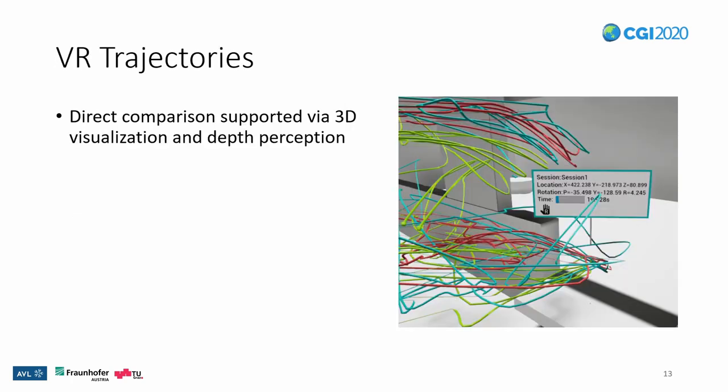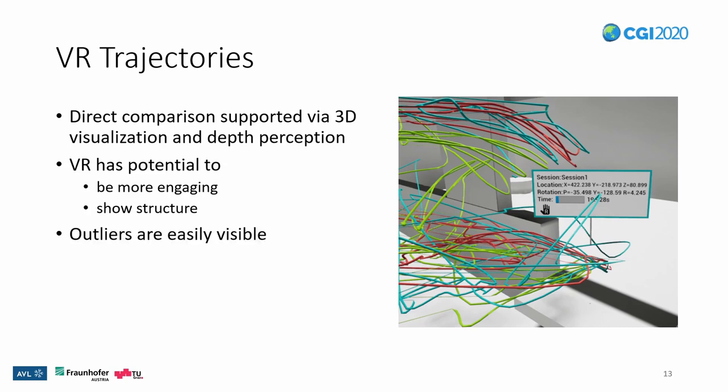For our work, we have decided to use 3D trajectories to visualize the movement data. This allows for a direct comparison of the movement without any additional visualization and gives us the chance to make use of VR's depth perception. According to previous studies, VR also has the potential to be more engaging and to be good at showing structure in data. With this, outliers are easily visible by just looking at the data. For example, we can quickly see that the blue session moves erratically.